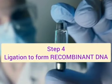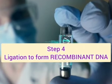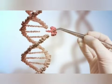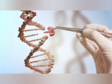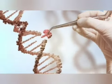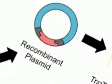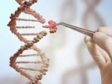Number 4: Ligation of DNA molecules to form R-DNA. The process of joining of DNA molecule of the desired gene and the vector by using the enzyme DNA ligase is called ligation. This results in the formation of recombinant DNA.